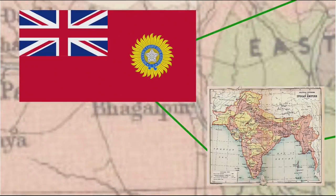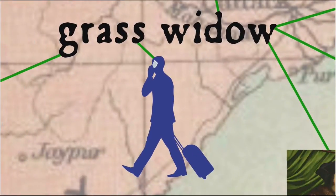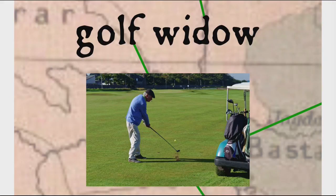I bring up India again because it's there, during the British Raj, that 'grass widow,' to get back to that expression again, may have gained its more modern sense of a married woman whose husband is away. The wives of the officers were sent off to the cooler and greener hill stations during the hot summer months, while their husbands had to remain on duty in the hotter plains. In addition to 'grass widow' often referring to the wife of a man engaged in obsessional activities such as golf, we have the more specific term 'golf widow.'